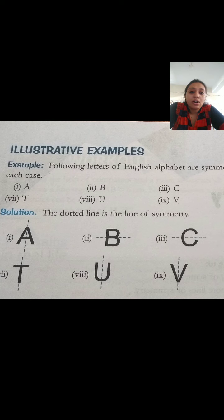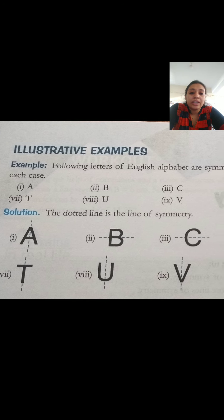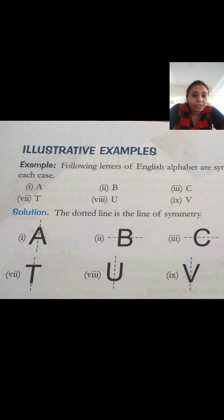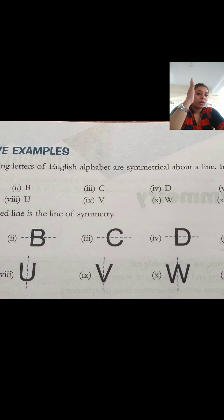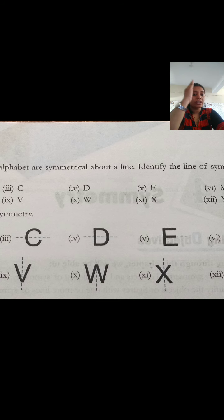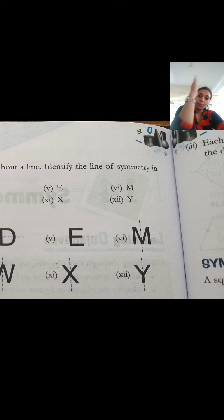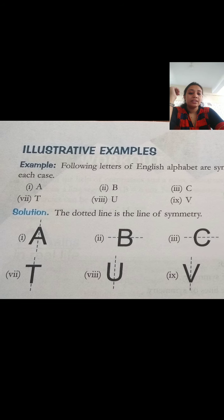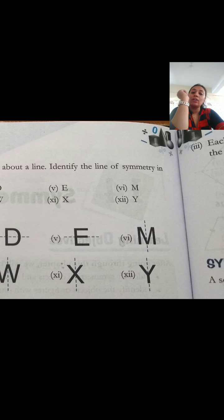See the illustrative examples. Following letters of the English alphabet are symmetrical about a line - identify the lines of symmetry in each case. In A there is vertical symmetry. In B, C, D, and E there is horizontal symmetry, not vertical. In M, T, U, V, W, X, and Y there is vertical symmetry, no horizontal symmetry.